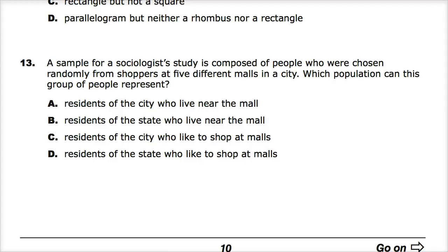A sample for a sociologist study is composed of people who were chosen randomly from shoppers at five different malls in a city. So at least they went to lots of different places. Which population can this group of people represent? When you're doing a sampling, your results are limited to the depth and breadth of your sample size.